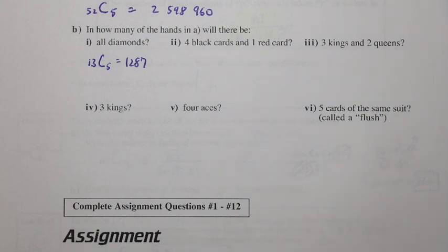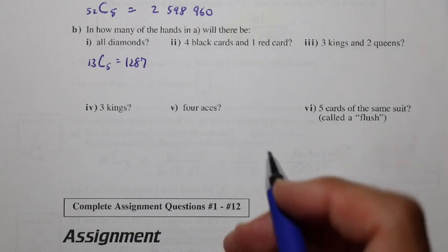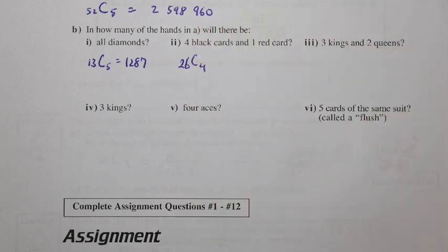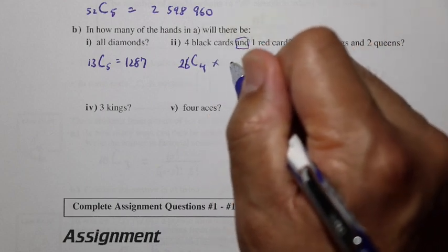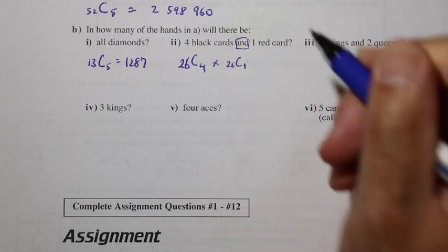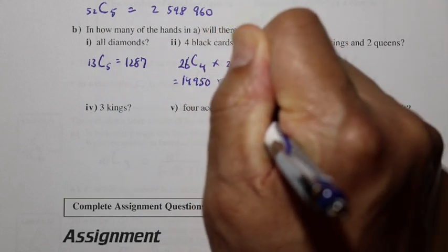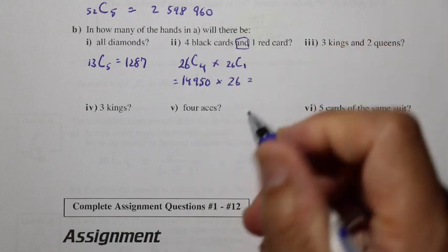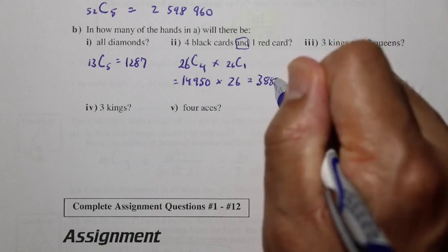What about 4 black cards and 1 red card? Since 2 suits are black and 2 are red, half the deck is black — 26 black cards — and we need 4 of them. Then 'and' means multiplication, so we also need 1 red card from 26 red cards. So 26C4 times 26C1 equals 14,950 times 26, giving a total of 388,700.